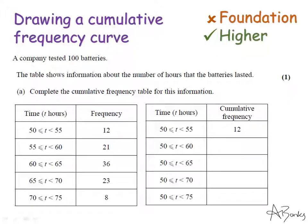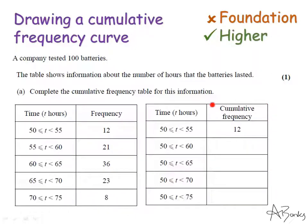So the first thing I'm going to do is accumulate my values in the table — these frequencies here — which basically means I'm going to do a running total. Some questions have this as a part A to help you. This one says 'complete the cumulative frequency table for this information,' giving a hint that there's something to fill in. It won't always have that as a part A, but if it doesn't, you need to add this column to the table yourself.